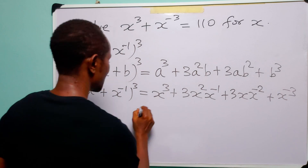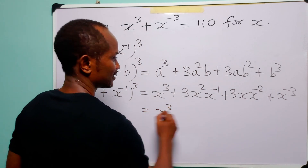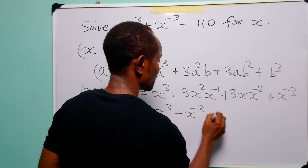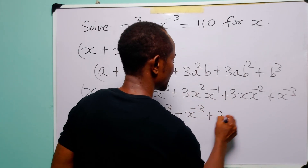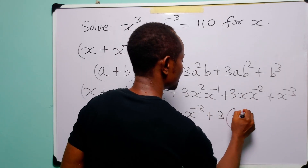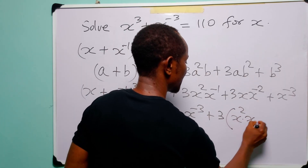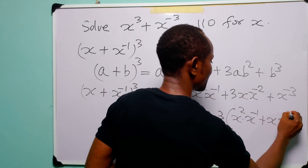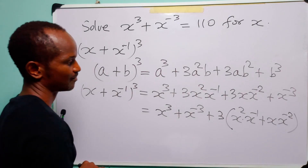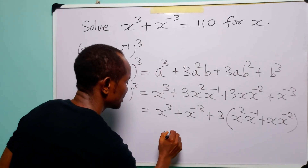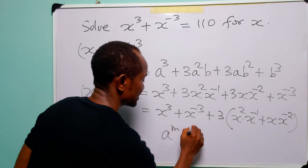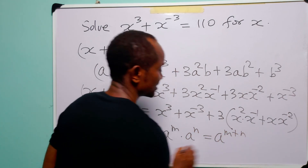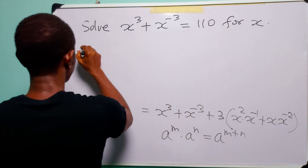Collecting like terms, this is equal to x³ + x⁻³. We also have 3 here and 3 here, so we can factorize: 3 times (x² · x⁻¹ + x · x⁻²). Recall that aᵐ × aⁿ = aᵐ⁺ⁿ.